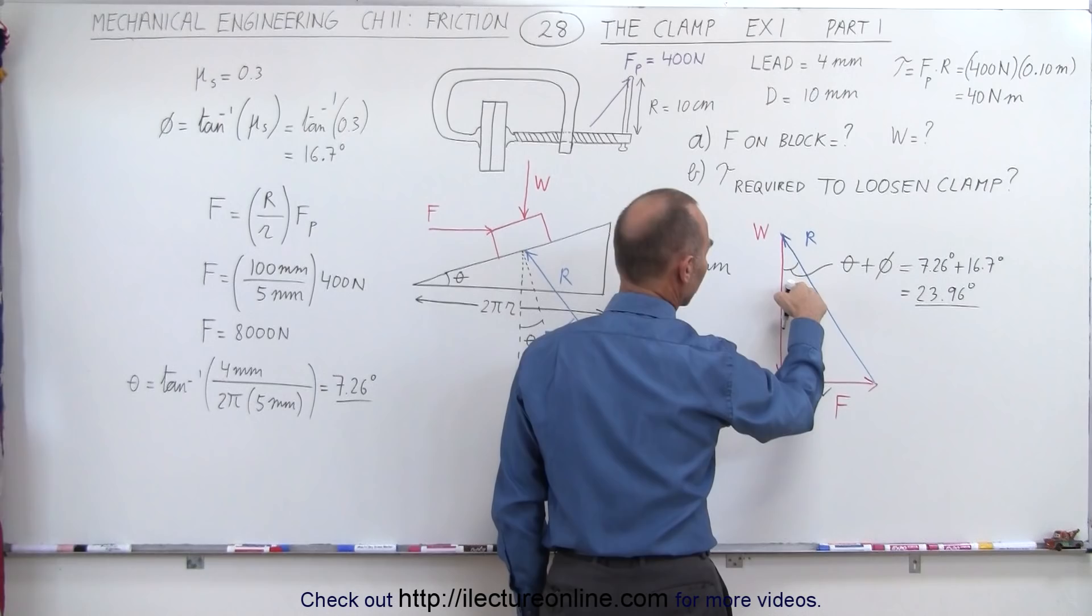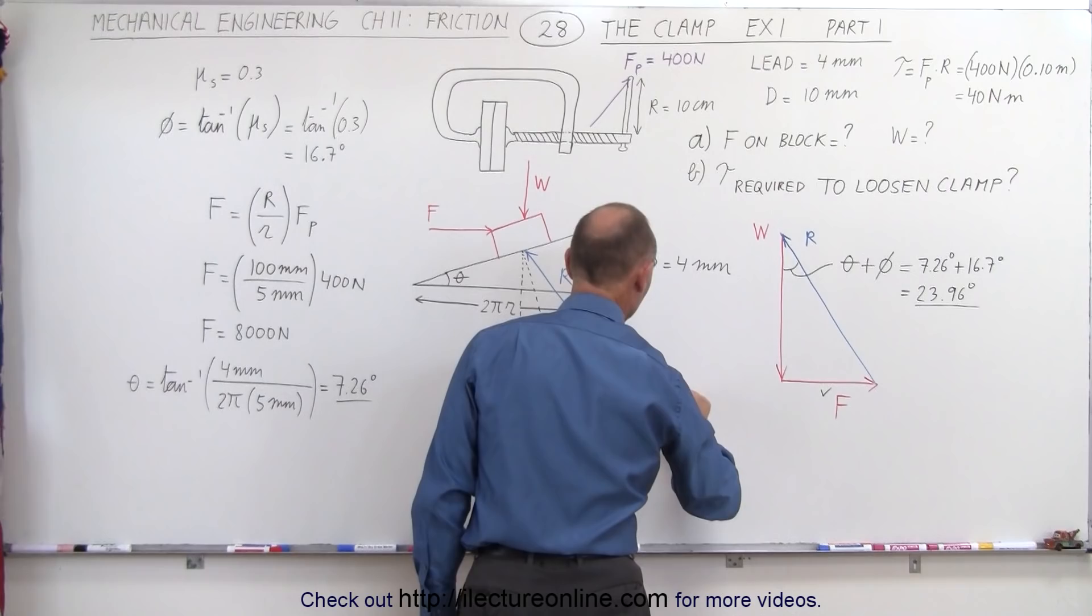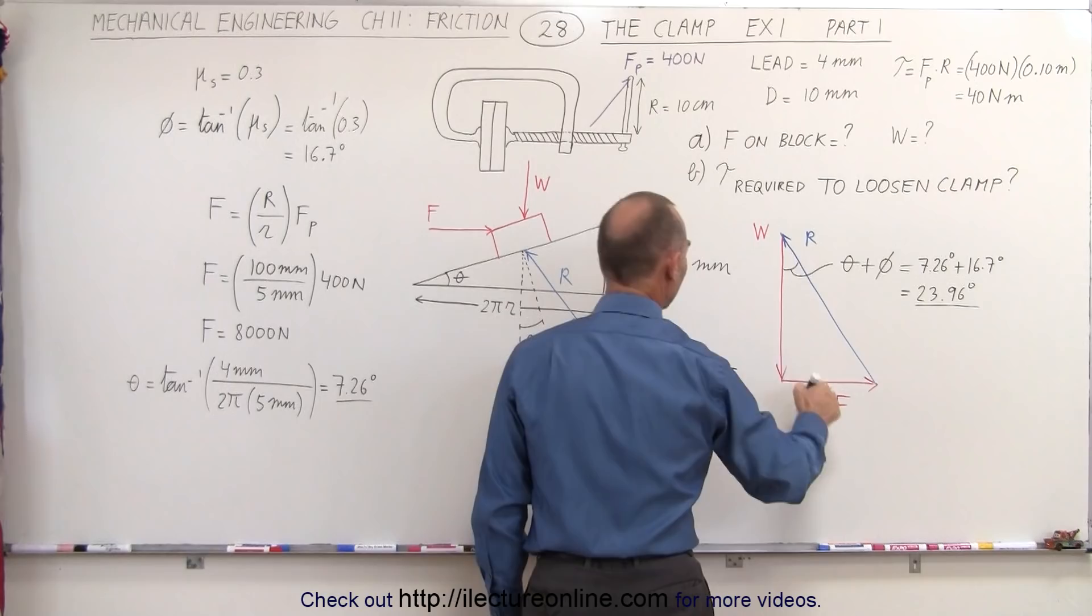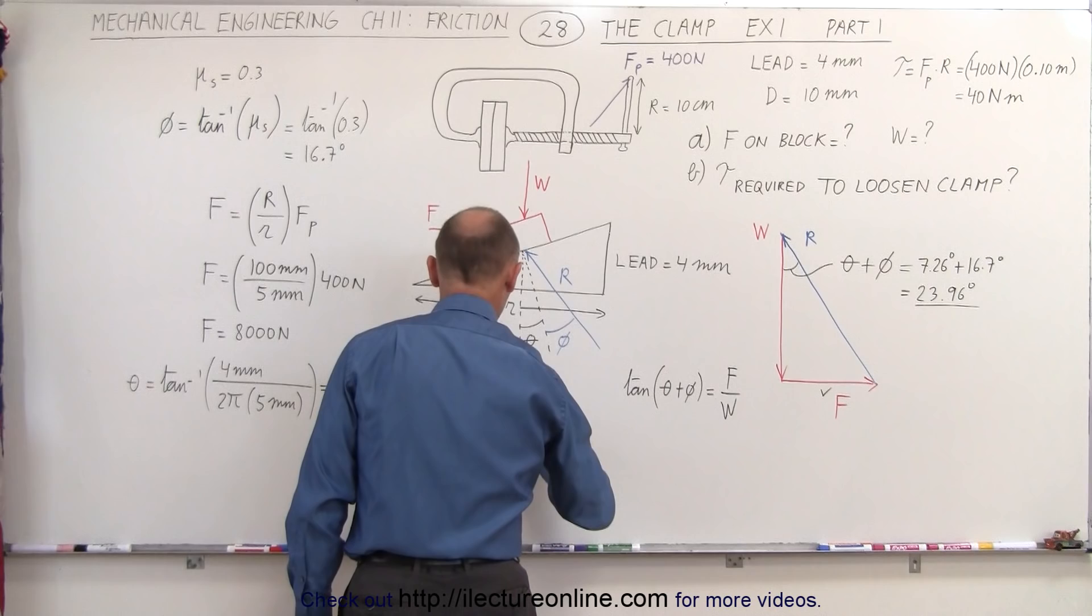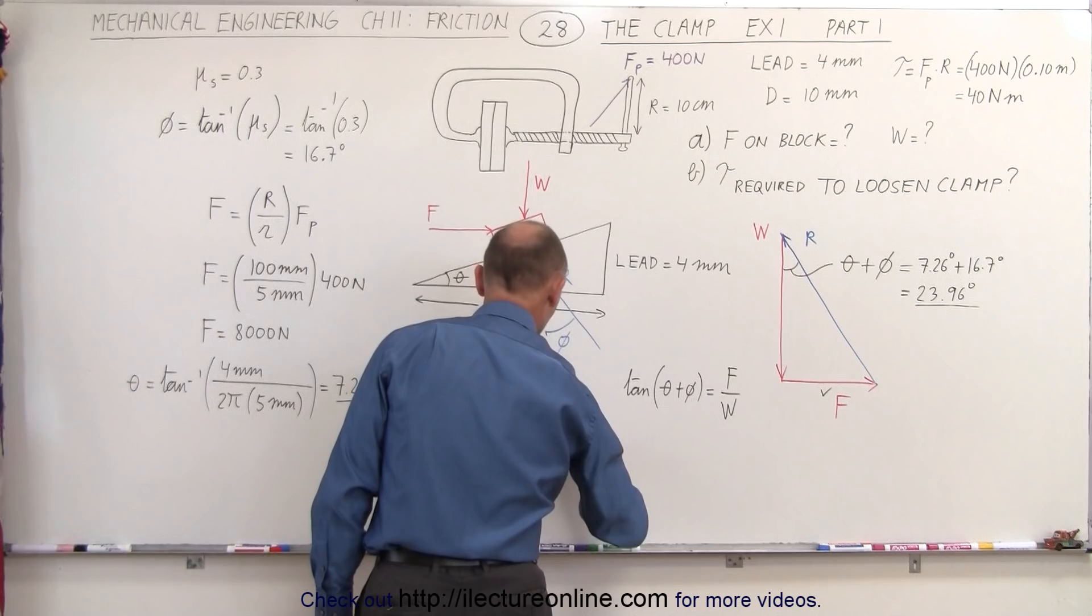And we're looking for w. So we're going to use these two sides and we have this angle. That means that the tangent of the sum of the two angles theta plus phi is equal to the opposite side, which is f, divided by the adjacent side, which is w.